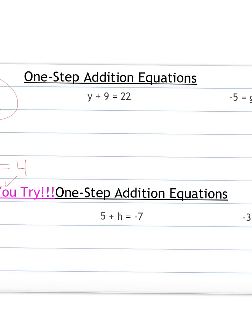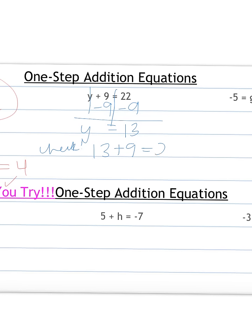Next: y plus 9 equals 22. Our equation is written. Now we need to get the variable by itself. Right now it's y plus 9, so we subtract 9 from both sides. Now we have y — 9 minus 9 is 0, so that can be left off. We bring our equal sign straight down. 22 minus 9 equals 13. As a check, 13 plus 9 is 22, so therefore y equals 13 and my answer is correct.